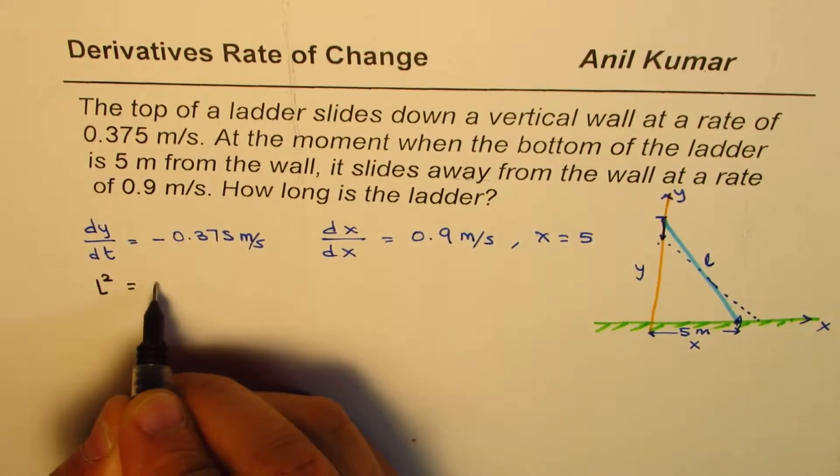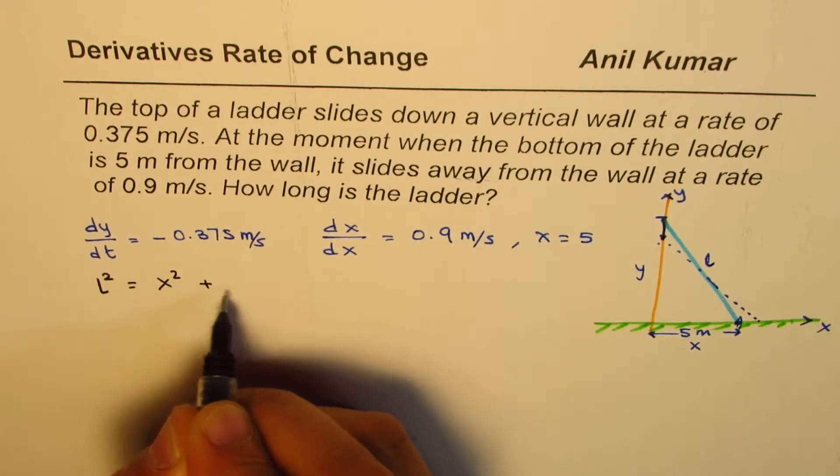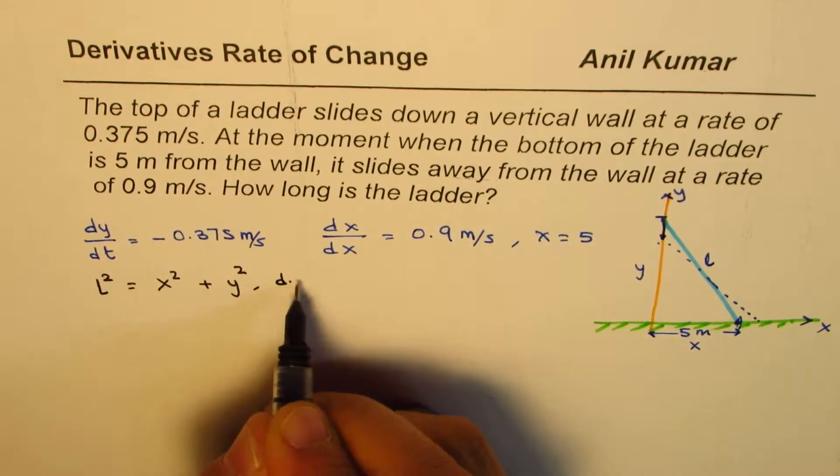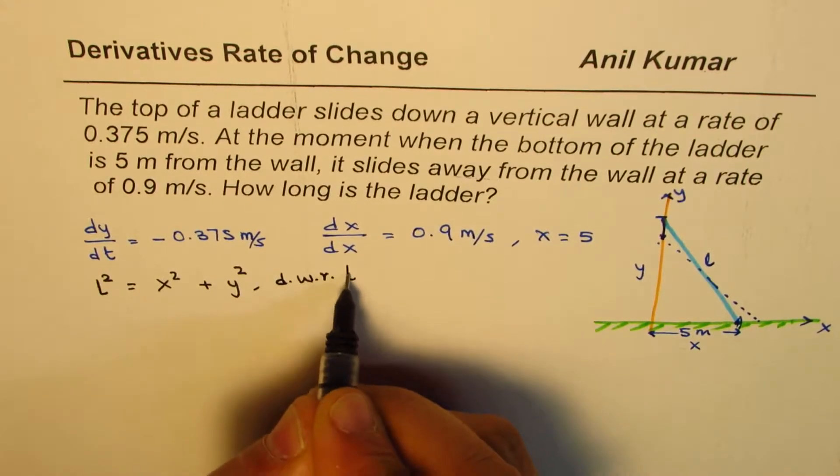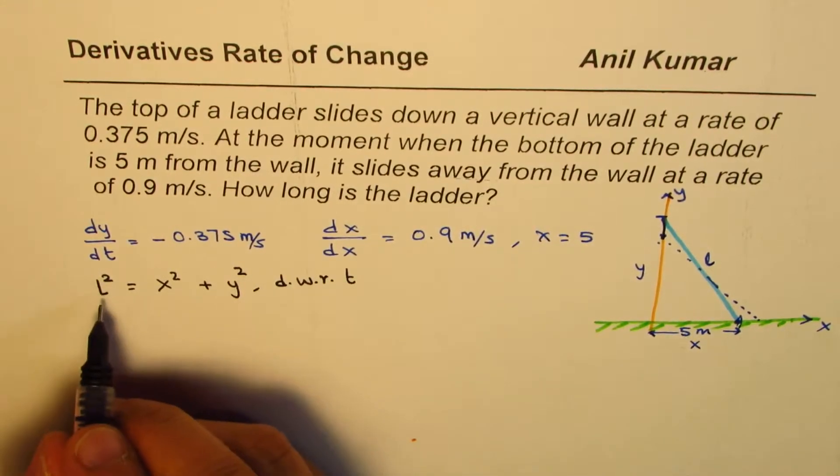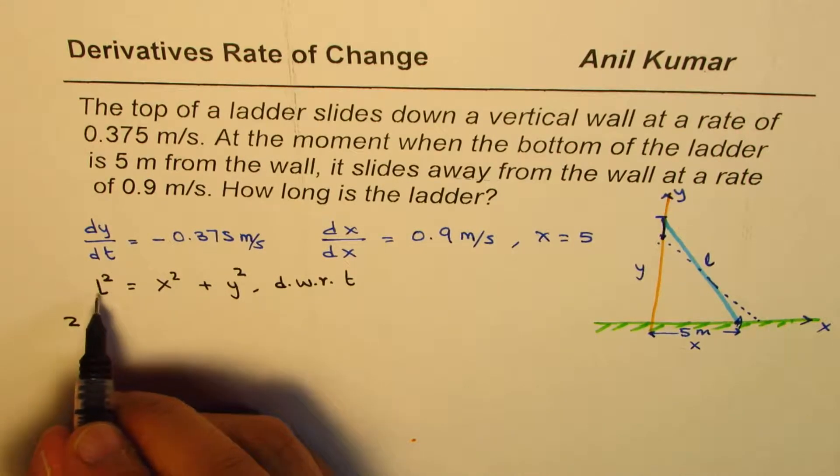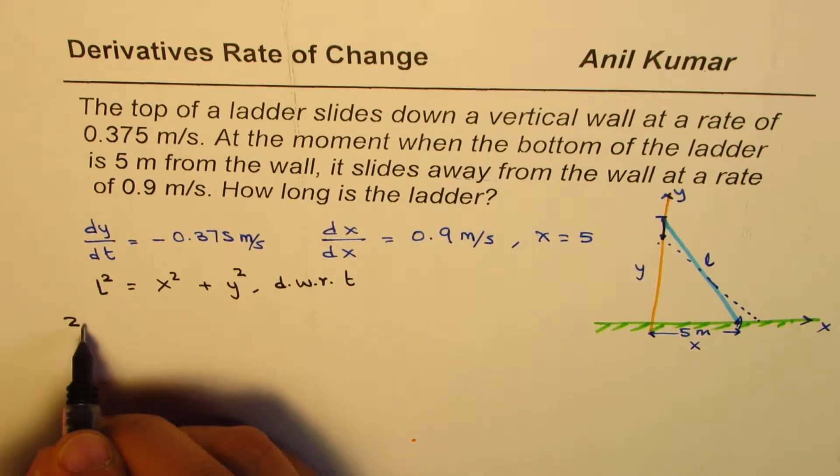So let me differentiate this with respect to time. So when I do that, I get 2L(dL/dt), right? 2 times L times dL/dt.